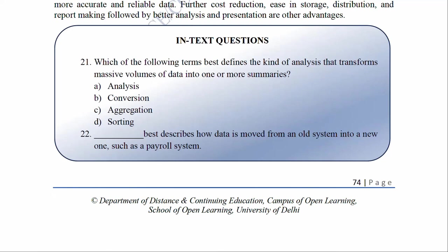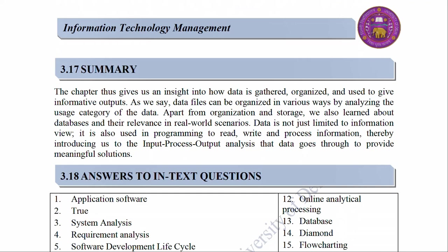In-text questions: Question 21 — Which of the following terms best defines the kind of analysis that transforms massive volumes of data into one or more summaries? A. Analysis, B. Conversion, C. Aggregation, D. Sorting. Question 22 — Dash best describes how data is moved from an old system into a new one such as a payroll system. 3.17 Summary: This chapter gives us an insight into how data is gathered, organized, and used to give informative output. Data files can be organized in various ways by analyzing the usage category of the data. Apart from organization and storage, we also learned about databases and their relevance in real-world scenarios. Data is also used in programming to read, write, and process information, thereby introducing us to the input process output analysis that data goes through to provide meaningful solutions. Thank you for listening.